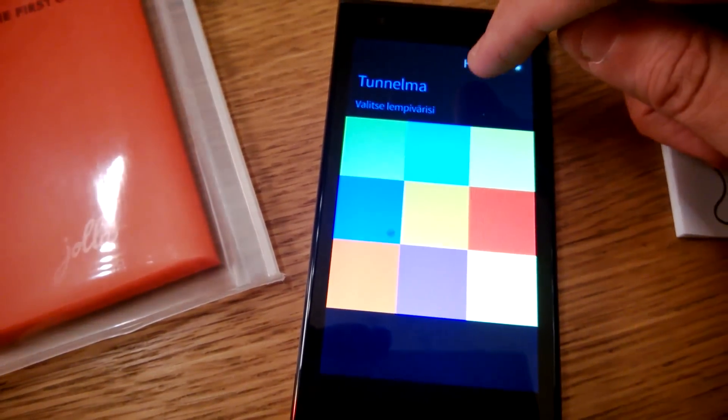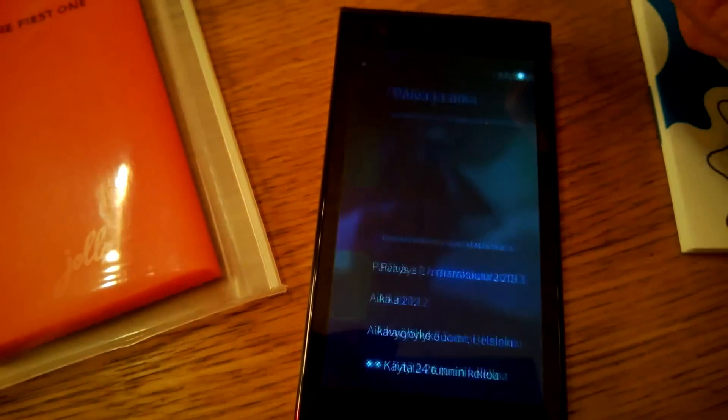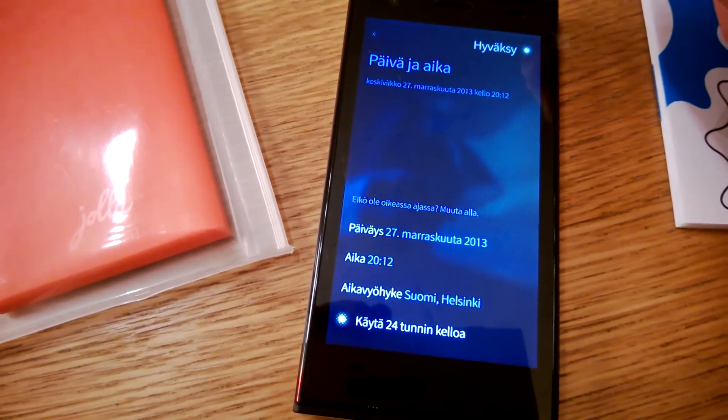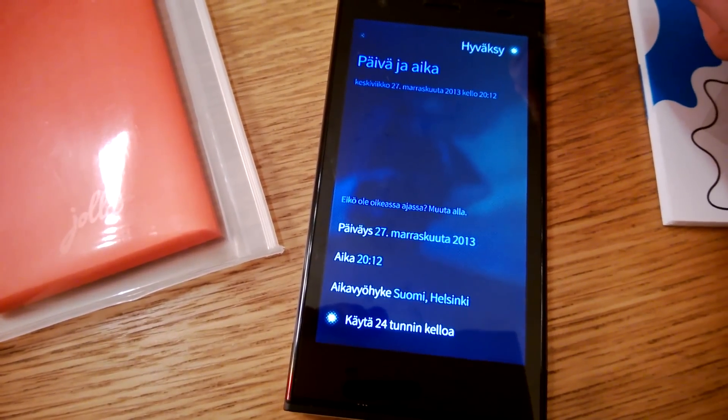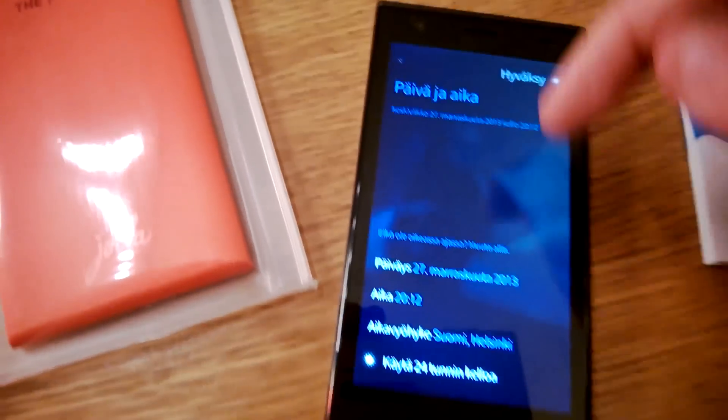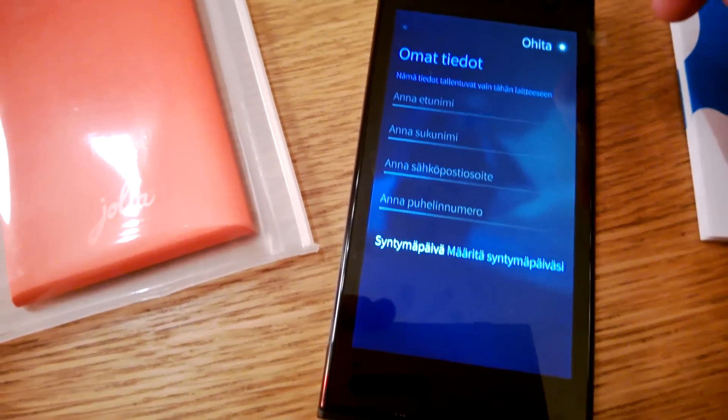Okay. I can go back. I don't want to go back. I want to approve it. Time. I think it's okay. Approve. My name. Okay. I'll use my details. And let's see. I will show you some more details about my new Jolla phone a little bit later. See you.